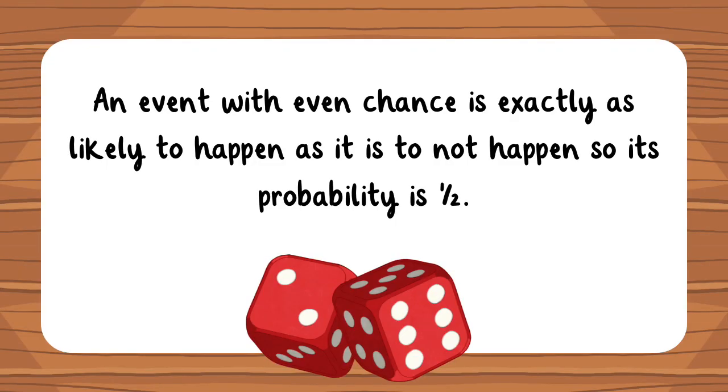An event with an even chance is exactly as likely to happen as it is not to happen, so its probability is one over two.